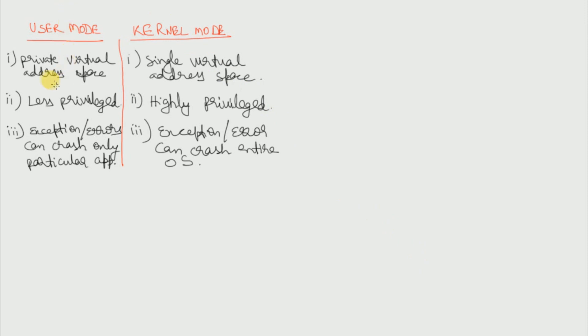The first point of difference between user mode and kernel mode is that user mode has private virtual address space, while the kernel mode has only a single address space.